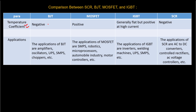Next is temperature coefficient. BJT has a negative temperature coefficient. MOSFET has a positive temperature coefficient. IGBT is flat but positive at high current. SCR has a negative temperature coefficient. For negative temperature coefficient, as temperature rises, resistance decreases.